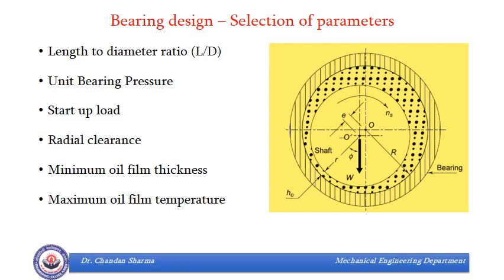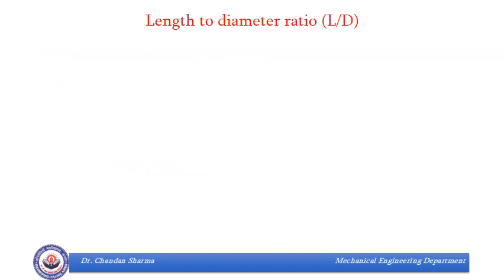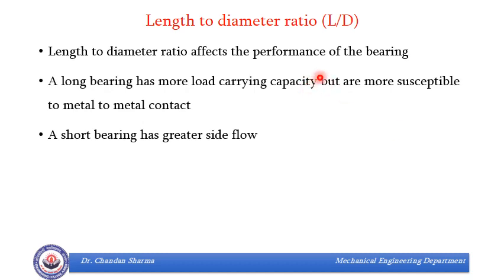This temperature is going to affect the amount of heat which is being generated. We will now discuss these various parameters in detail, starting with the length to diameter ratio. There ought to be an optimum value of L/D because if length is more compared to diameter of journal, there will be chances of metal to metal contact when load is applied. On the other hand, if the length of bearing is less, oil flow will not be proper. So we need to take an optimum value of L/D.